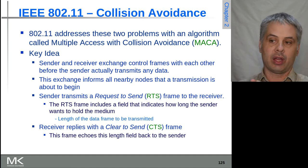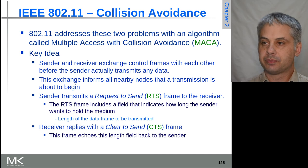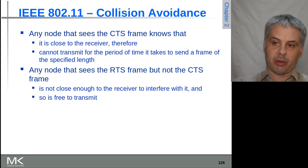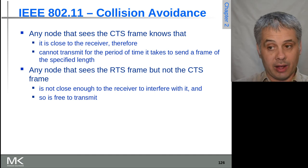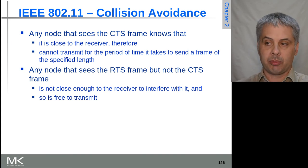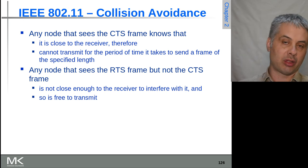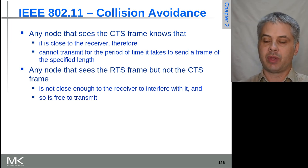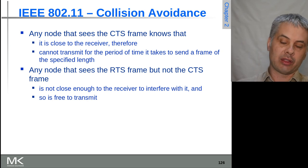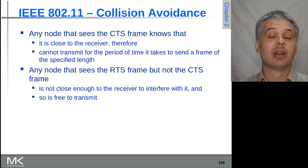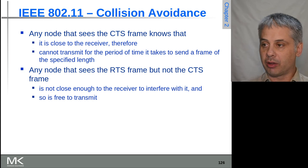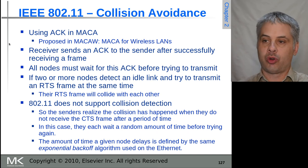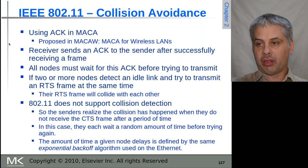Any node that hears the RTS but not the CTS doesn't need to stop transmitting, because if it can't hear the sender who sent the CTS, that sender probably can't hear transmissions from it either — this is not strictly guaranteed but generally holds. By including the frame length in the CTS, every node that hears it knows exactly how long to stay off the channel, providing a considerable advantage in managing collisions.